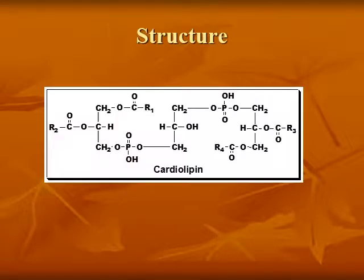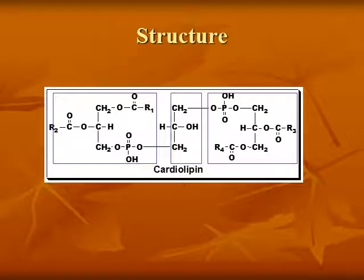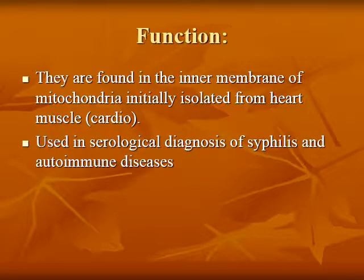Cardiolipin is composed of glycerol and two phosphatidic acid units. It is found in the inner membrane of the mitochondria, initially described in heart muscle — hence called cardiolipin. It is used in the serological diagnosis of syphilis and autoimmune disease.